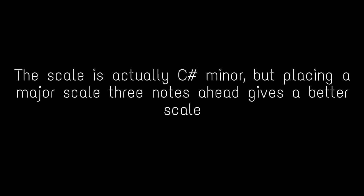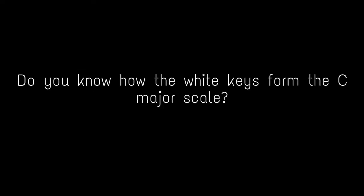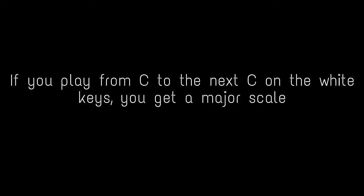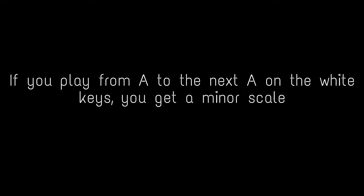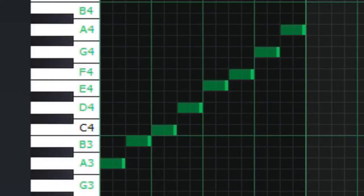Now let's figure out some chords for the melody. The scale is actually C sharp minor, but placing a major scale three notes ahead gives a better scale. Okay let me explain this. Do you know how the white keys form the same major scale? If you play from C to the next C on the white keys you get a major scale. Now these white keys also form an A minor scale. If you play from A to the next A on the white keys you get a minor scale. You can clearly hear the difference — the major sounds more cheerful and the minor sounds edgy.